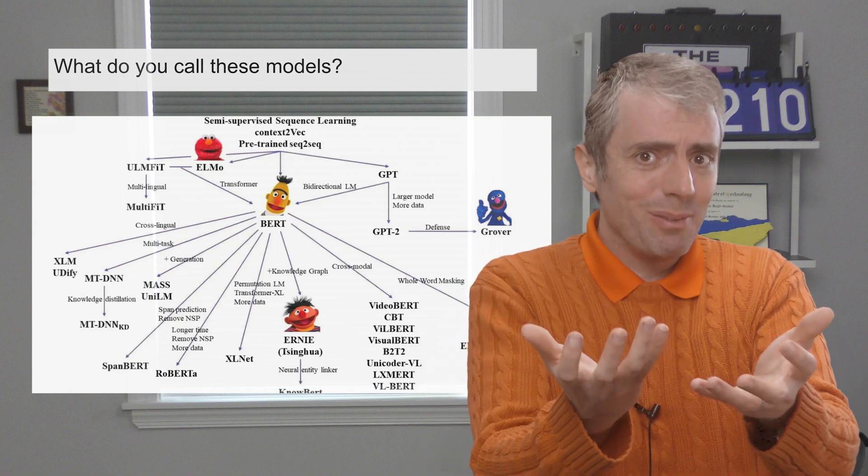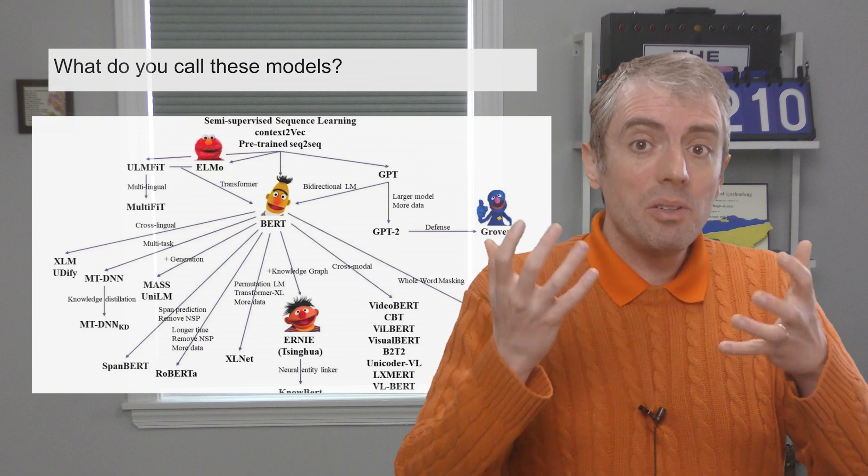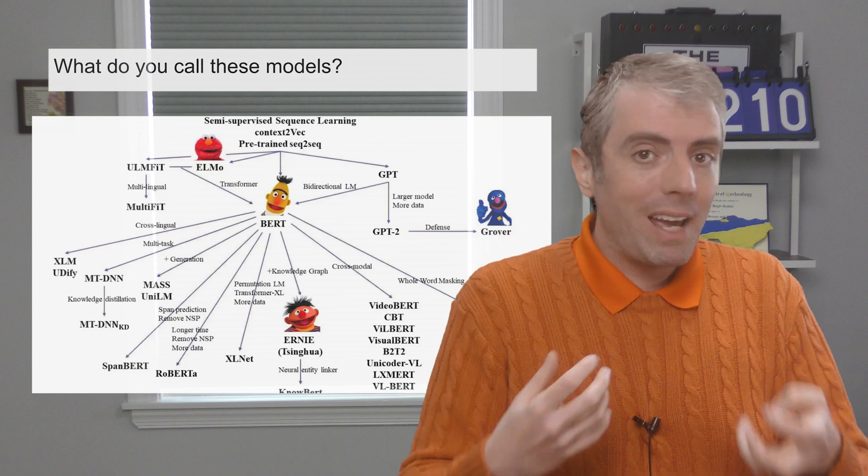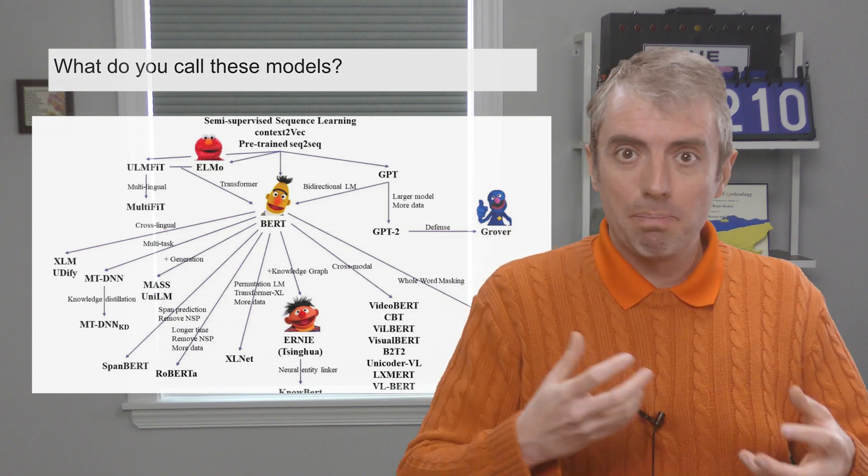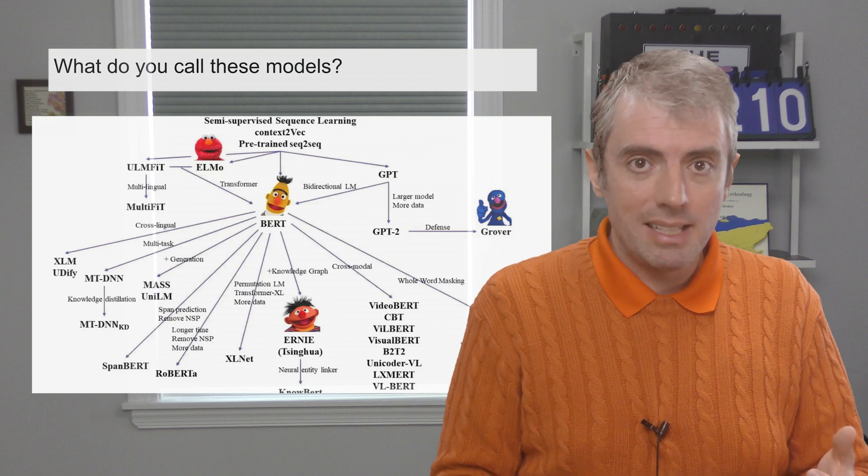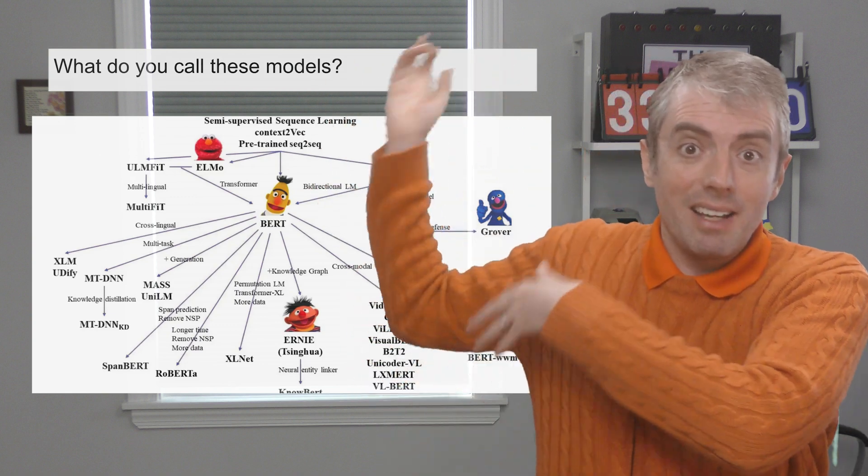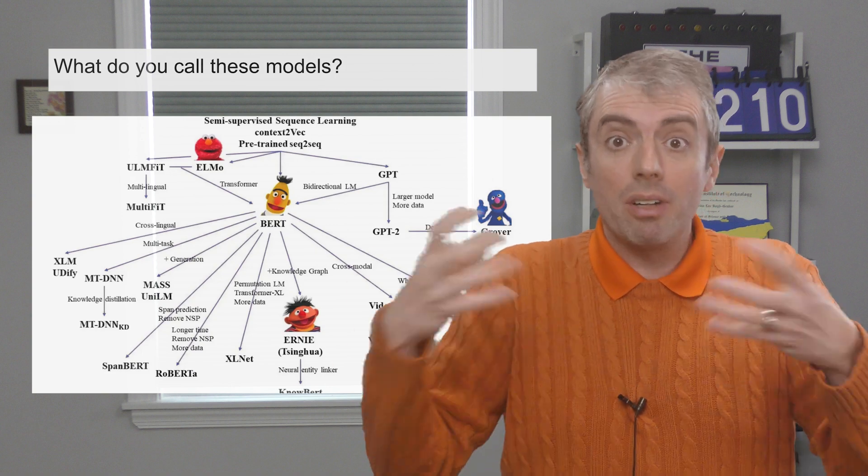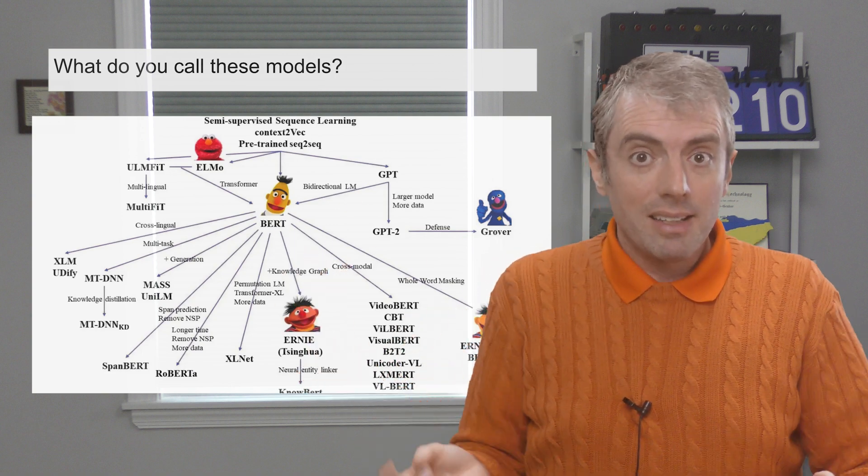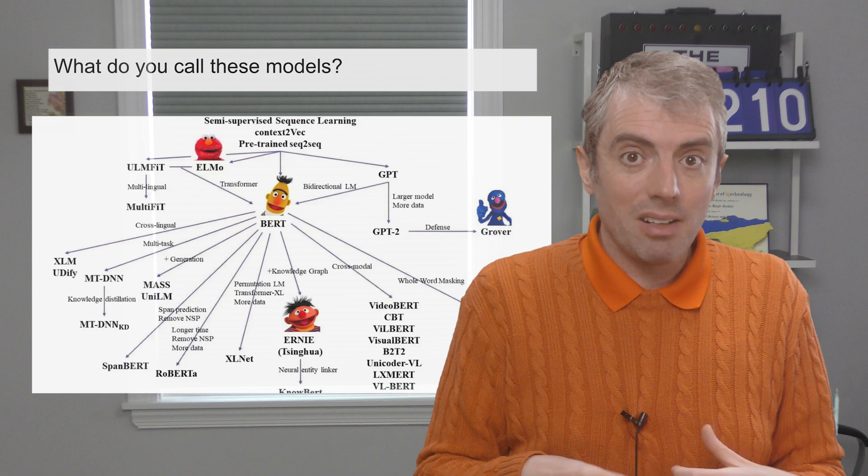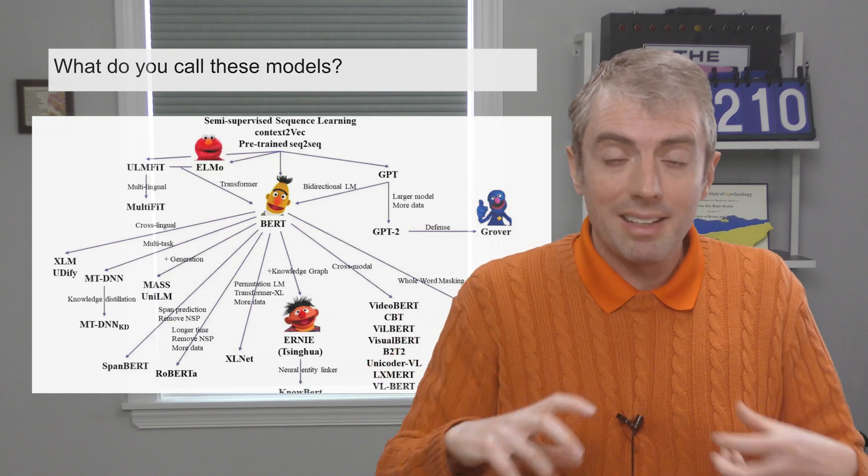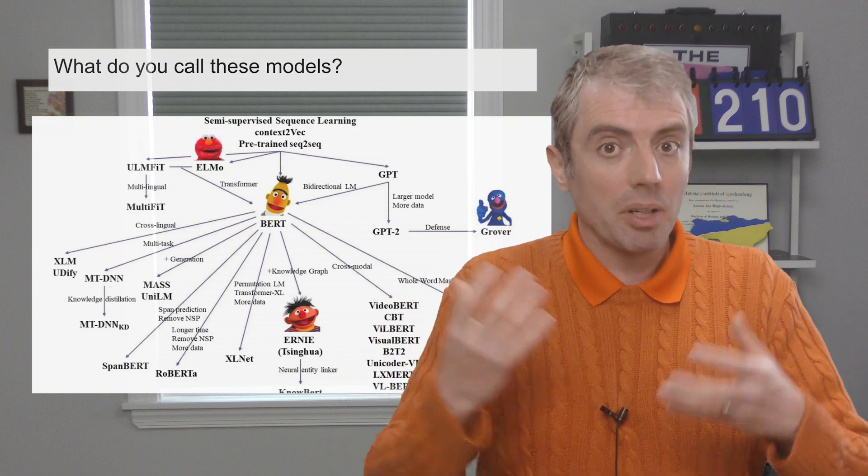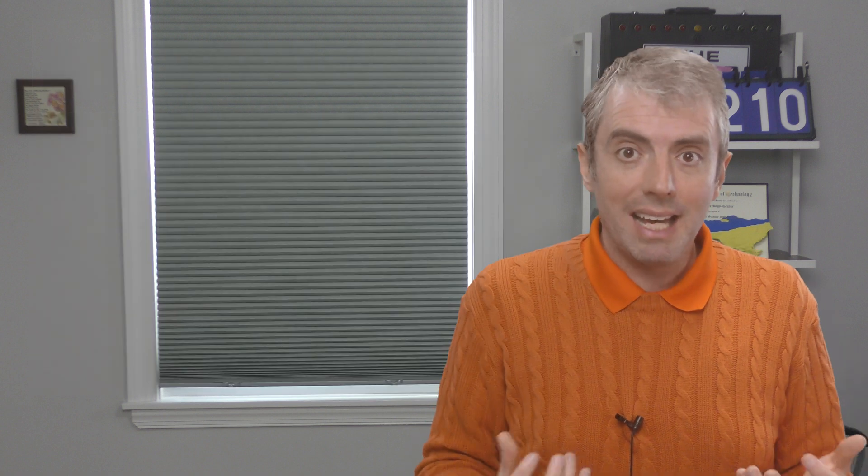So let me start off by asking you, what should you call the whole family of models like BERT and GPT and all of this other mishigas that's in the news these days? People naturally want to have a general name for these things since they use common components and are trained in similar ways and then are applied in similar ways to similar tasks.